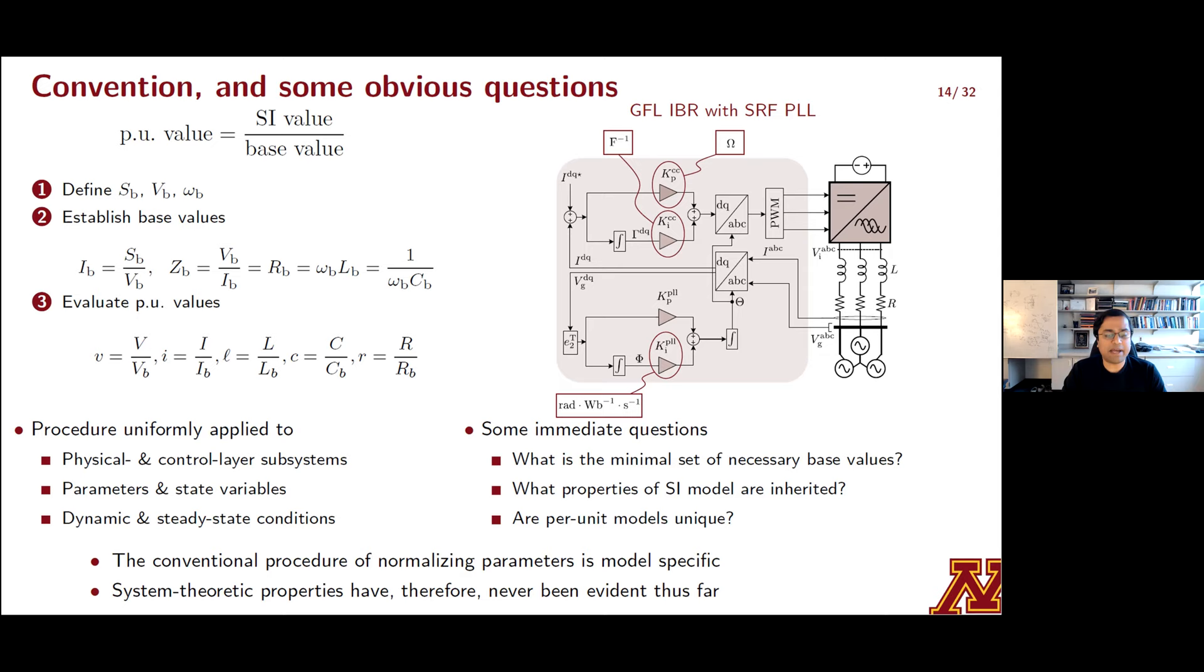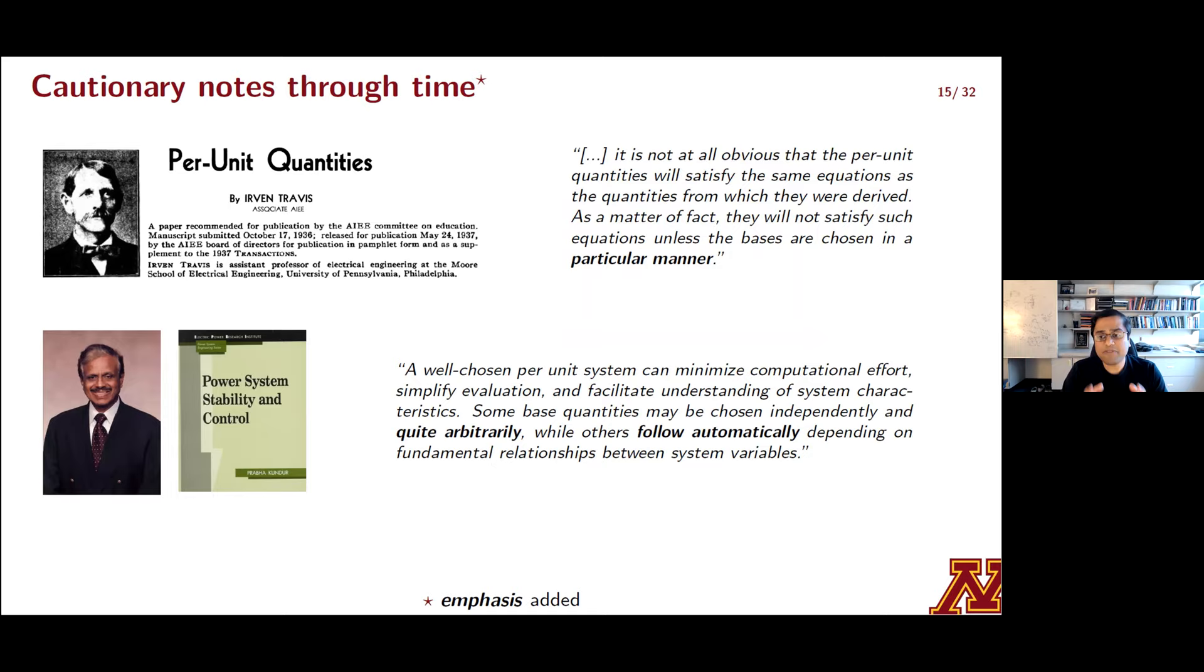And it's not just us that we ran into this when we were dealing with this in the context of power converters. This problem with the conventional procedure has actually been recognized through the ages. If you do a literature review on per unit in IEEE Explore, just those two keywords, nothing else, you'll discover that the first material on the topic is really a brilliantly written paper in 1937 by one Irwin Travis. And in it, he says, and I'll quote him, it's not at all obvious that the per unit quantities will satisfy the same equations as the ones that they were derived from. In fact, they won't unless the bases are chosen in a particular manner.